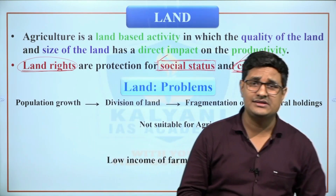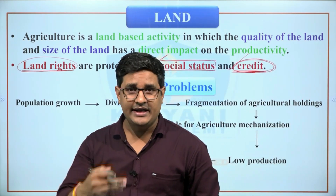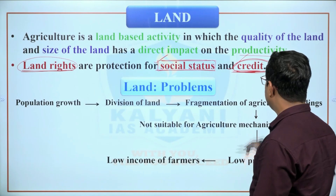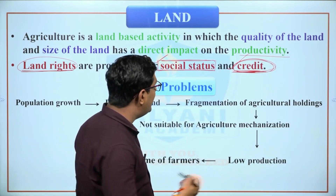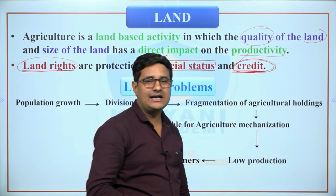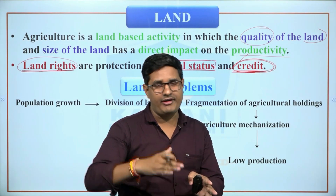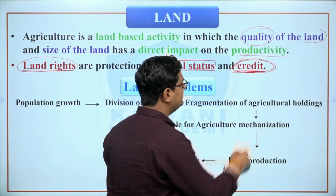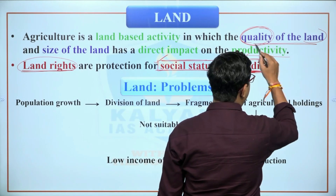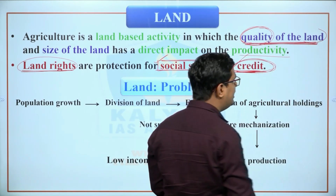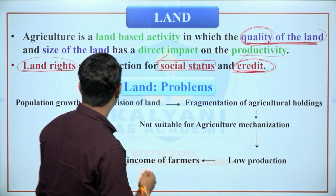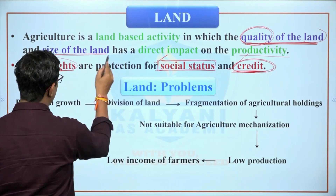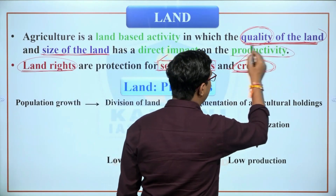Agriculture is a land-based activity, therefore land quality and land size have a direct relation with productivity. Land quality means the availability of all macronutrients and micronutrients — for example, nitrogen, phosphorus, potassium, zinc, etc. If all macronutrients are available in the soil, it is called fertile land, and agricultural production will increase. Additionally, if land size is large, mechanization becomes possible, further increasing productivity.